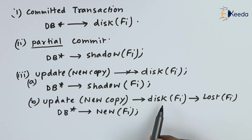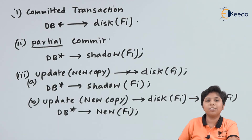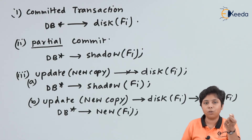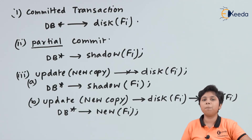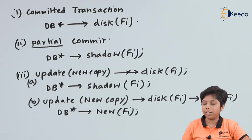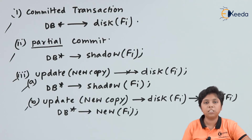Since the update was written to disk but the disk was then lost, the property being satisfied here is durability. Whoever has this new copy on disk can transfer it to another non-volatile storage to recover from the loss. So the shadow copy procedure provides atomicity support for cases 1 and 2, and durability support for cases 3a and 3b.